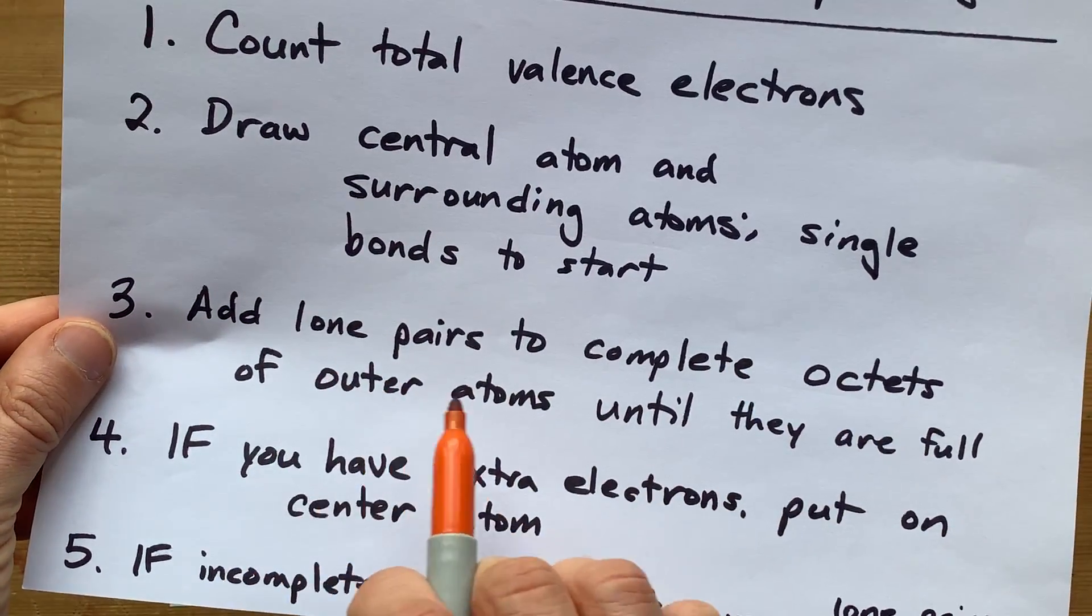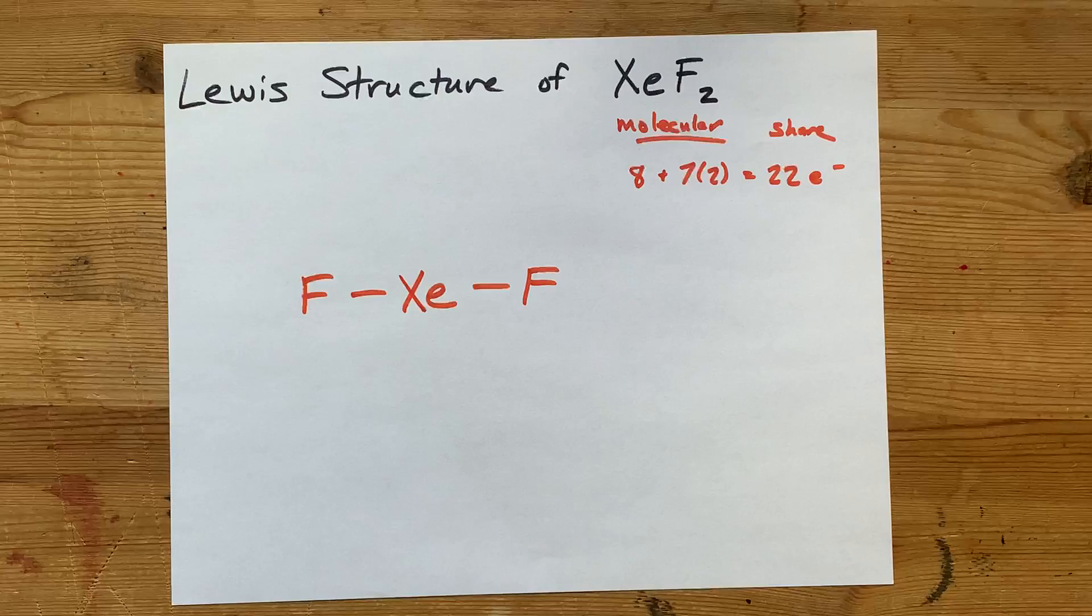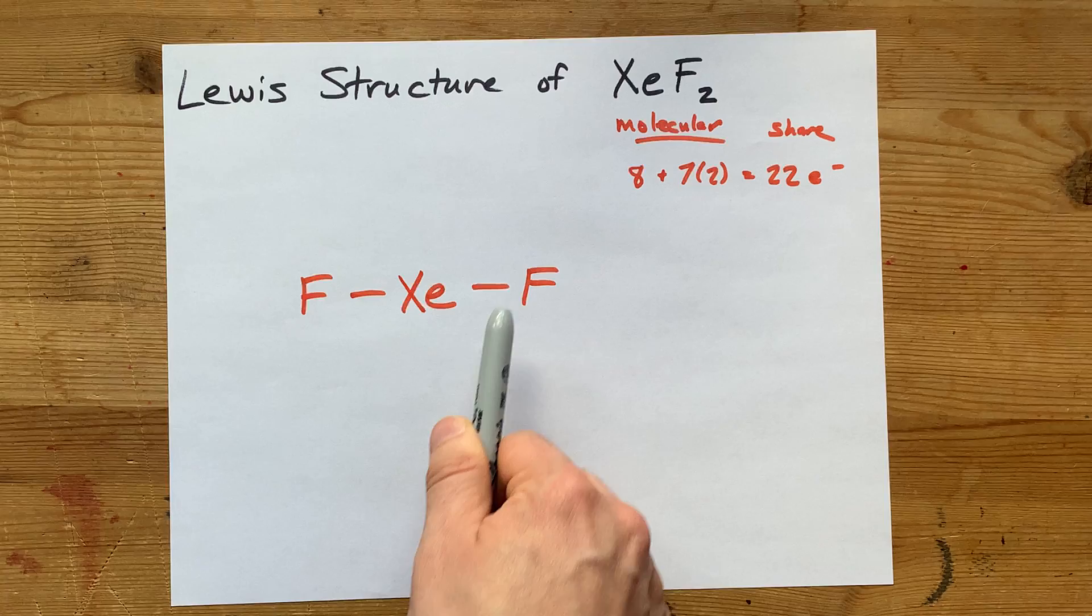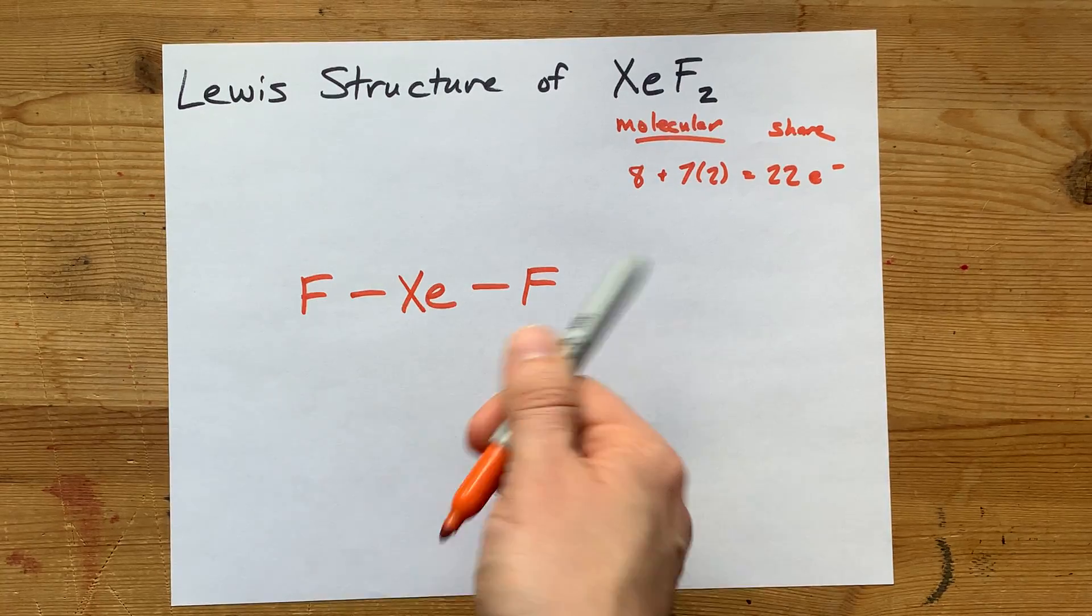So I'm going to need 22 electrons in my Lewis structure. I'm going to draw the central atom and the surrounding atoms and put single bonds in between them to start. I'm going to put my Xe down and single bond it to both of the fluorines.